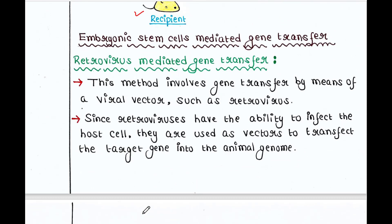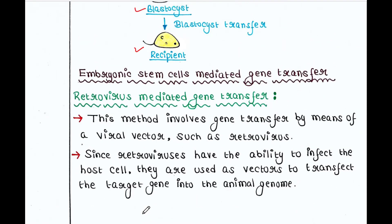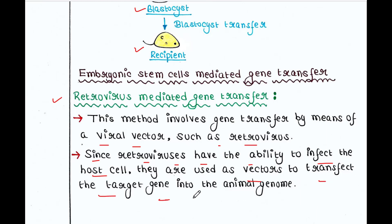The next process is retrovirus mediated gene transfer. This method involves gene transfer by means of a viral vector such as a retrovirus. Since retroviruses have the ability to infect the host cell, they are used as vectors to transfect the target gene into the animal genome.